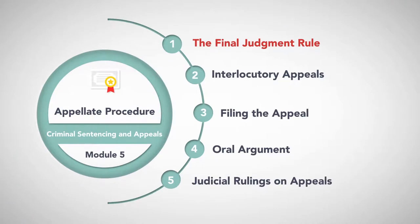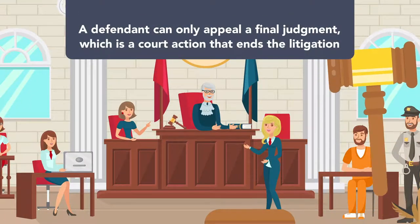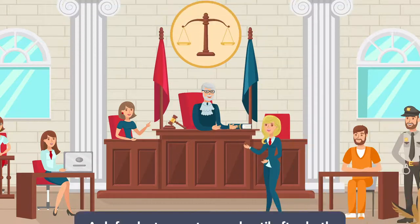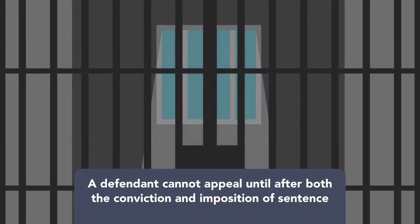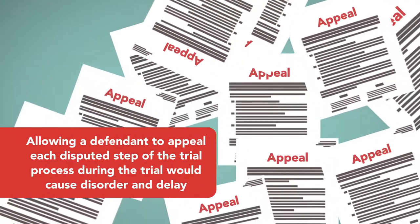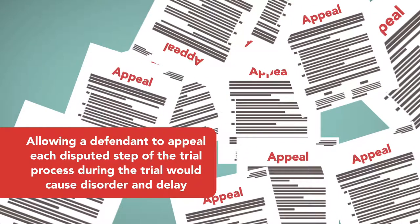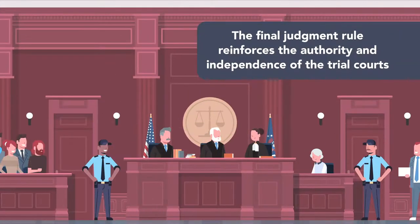The Final Judgment Rule. In most cases, a defendant can only appeal a final judgment, which is a court action that ends the litigation. In criminal cases, this means that a defendant cannot appeal until after both the conviction and imposition of sentence. Allowing a defendant to appeal each disputed step of the trial process during the trial would cause disorder and delay. The Final Judgment Rule reinforces the authority and independence of the trial courts.